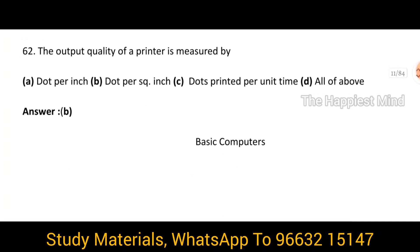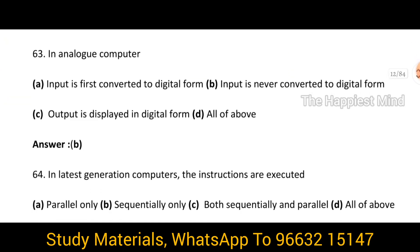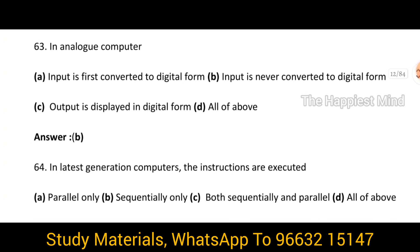Question 62: The output quality of a printer is measured by? It is option B, dots per square inch. So it is measured by dots per square inch. Question 63: In an analog computer, option B — the input is never converted to digital form.